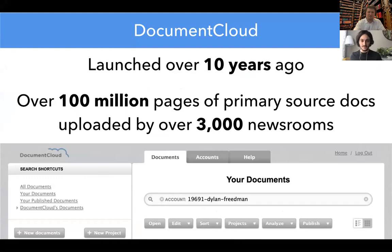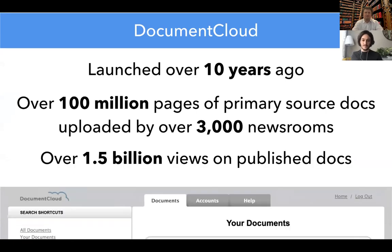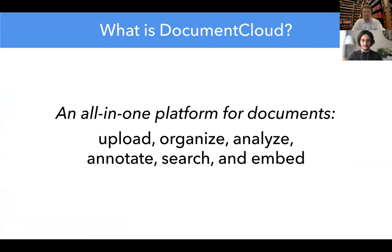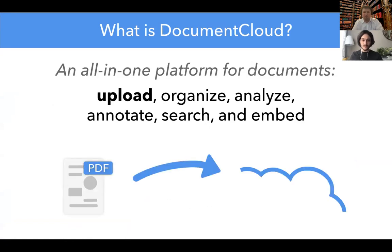We've had over 100 million pages of primary source documents uploaded by over 3,000 newsrooms. Those documents have been embedded on news articles that have cumulatively been viewed over one and a half billion times. For those of you who are unfamiliar with the platform, it's an all-in-one way of dealing with documents that you might get from a document dump or an investigation, or just documents you have on hand. You can upload them onto documentcloud.org — it's a website.